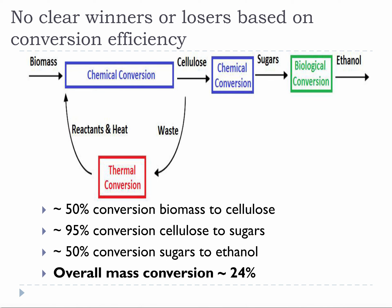Cellulosic ethanol has a slightly lower conversion efficiency than biomass to Fischer-Tropsch diesel. This process takes a hit right away because it only uses cellulose, and most biomass contains only about 50% cellulose — the non-cellulose part is discarded. After the cellulose is isolated, conversion of cellulose to sugars is pretty high at 90 to 95%. However, this is followed by a poor conversion of sugars to ethanol, because around half of the sugars get converted into more microbes and carbon dioxide, and the other half into ethanol. This leads to an overall mass conversion of around 24%.